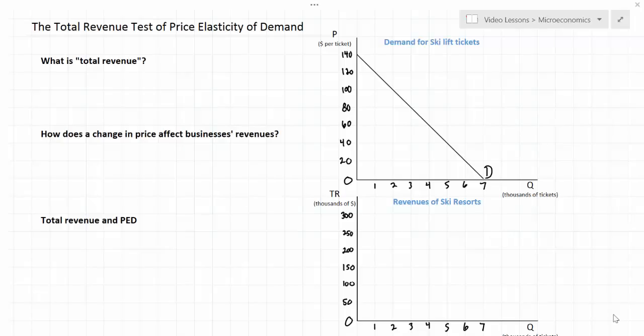In this lesson I'm going to introduce and explain a very simple method for determining whether demand for a particular good is elastic or inelastic between any two prices along a demand curve. This method is known as the total revenue test of price elasticity of demand.